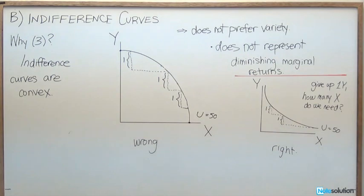So now we're going to look at the third property of indifference curves. The third property says that indifference curves are convex. So what exactly did convexity mean again?